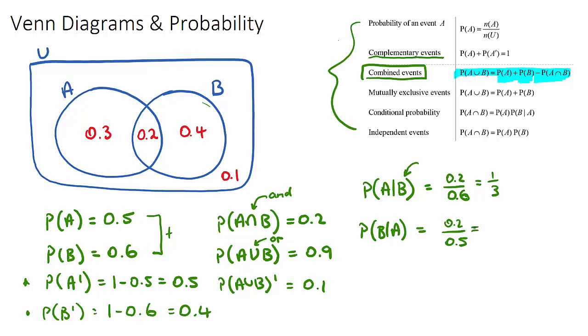We might get a tricky one, the probability of A given not B. The given that not B is very important, we need to make that the denominator. If we look at what's inside B and we consider everything outside of it, there is the 0.3 here and the 0.1, so 0.4 will be our denominator because it's not B. We can't have anything inside B. What's the probability of it being A out of this group? Of this group of 0.3 and 0.1, the 0.3 was inside A, so it'll be 0.3 over 0.4.